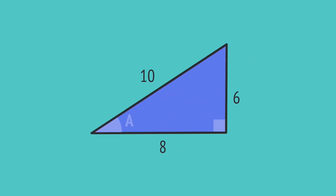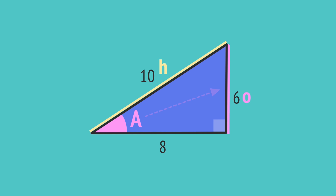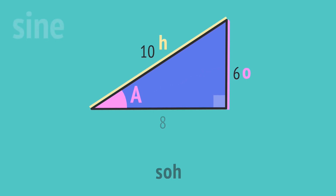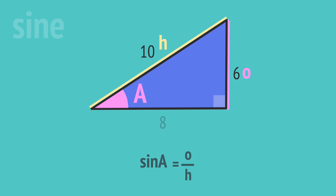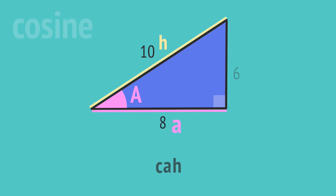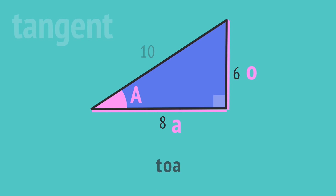Given any right-angled triangle with known side lengths, we can use SOH-CAH-TOA to write trig ratios for one of the angles, in this case angle A. We label the hypotenuse, the opposite, and the adjacent. The sine is the opposite over the hypotenuse, so we write sine A equals 6 over 10. The cosine is the adjacent over the hypotenuse, so we write cosine A equals 8 over 10. And the tangent is the opposite over the adjacent, so we write tangent A equals 6 over 8.